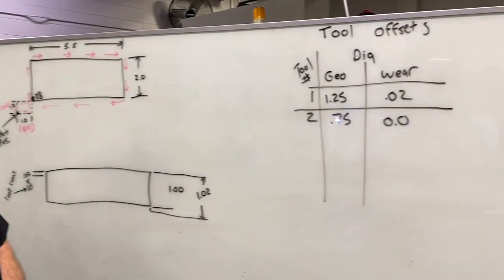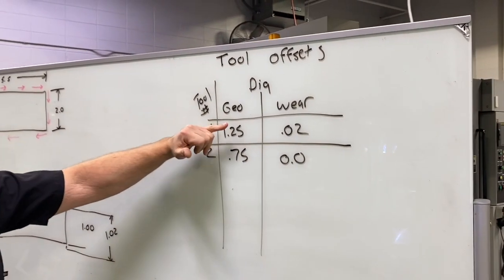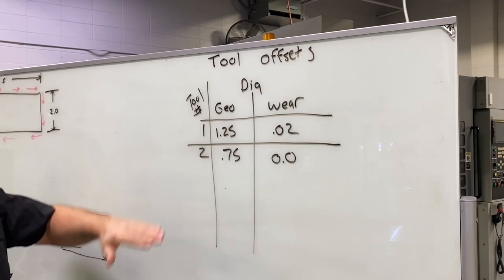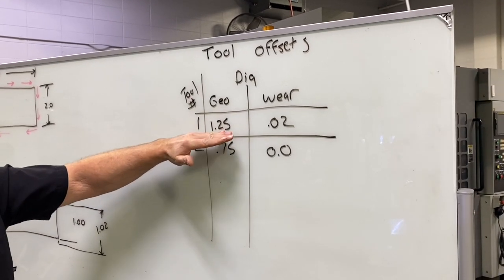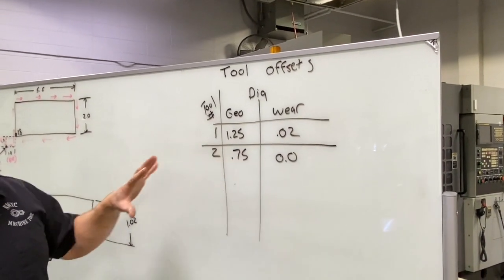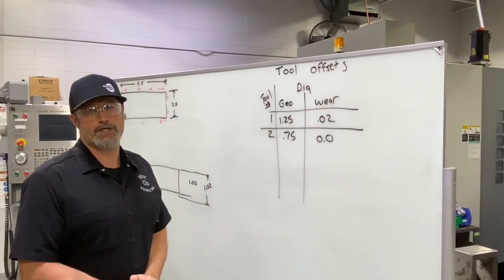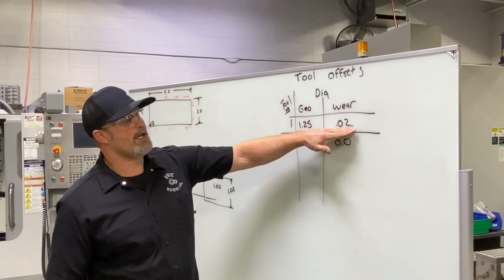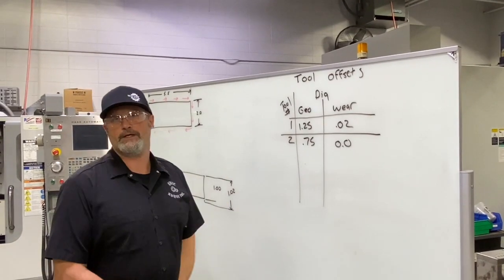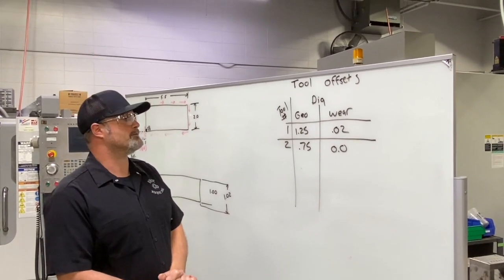Since we're using the same sub program for our rougher and finisher, looking at our tool offset page — we're using cutter compensation, so we need to put in our tool diameters. Some shops may use radius, so make sure you verify that on your machine. My roughing tool's actual diameter is inch and a quarter, and my finishing tool is three-quarters of an inch. The geometry in our sub program is programmed to finished size. So for the roughing tool, I'll add twenty-thousandths positive to my wear offset — that shifts the tool ten-thousandths away from the edge of the part, leaving material for our finishing tool to come through and finish to size.